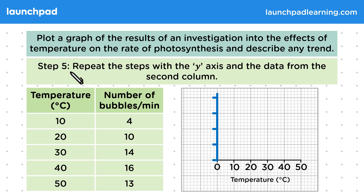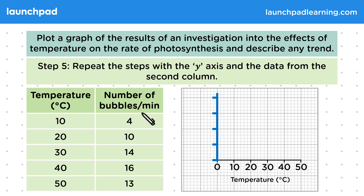Step five: repeat the steps with the y-axis and the data from the second column. The y-axis normally has the dependent variable plotted on it — the variable that you measure — in this case the number of bubbles per minute. Here's a good scale that we can use.